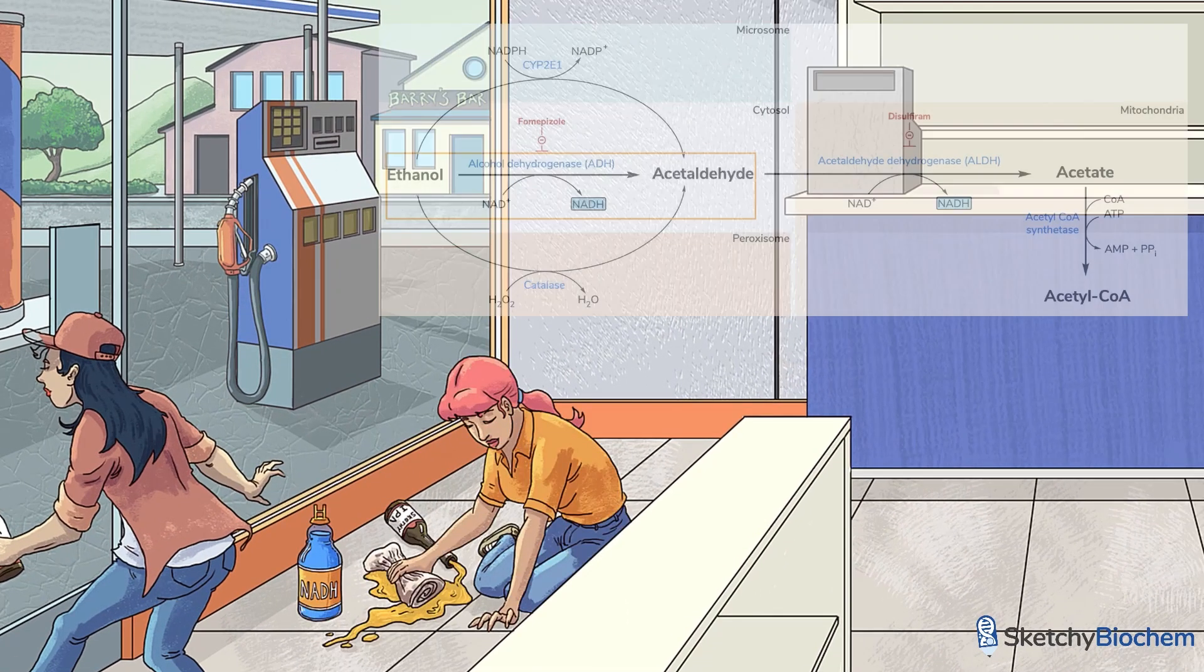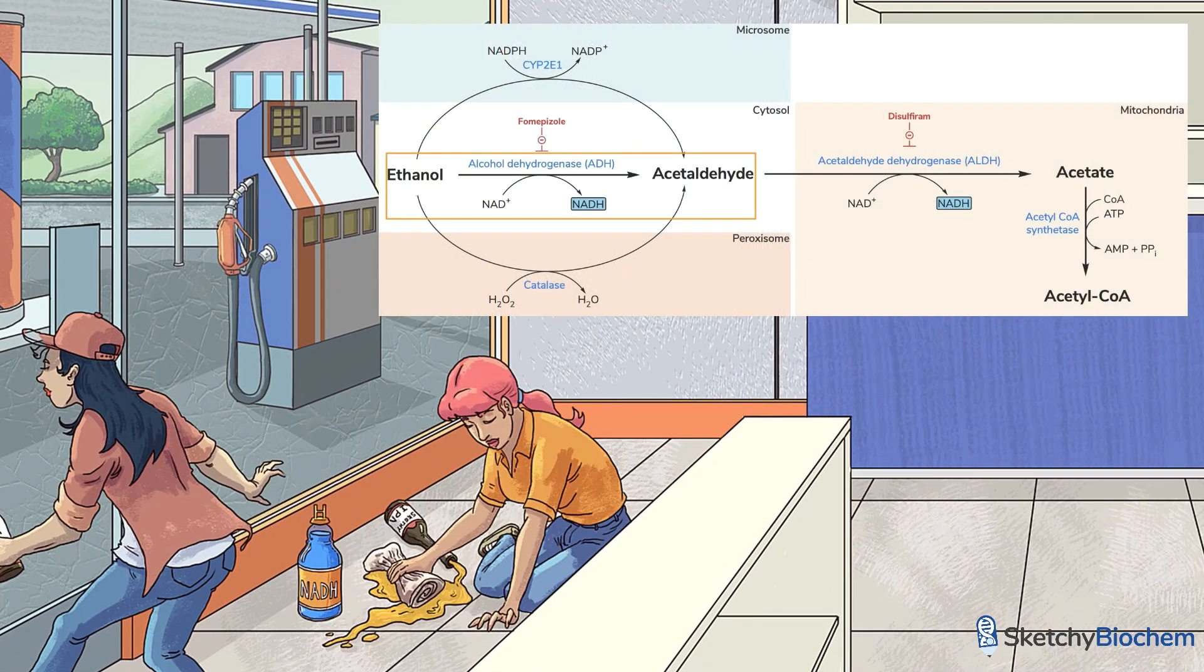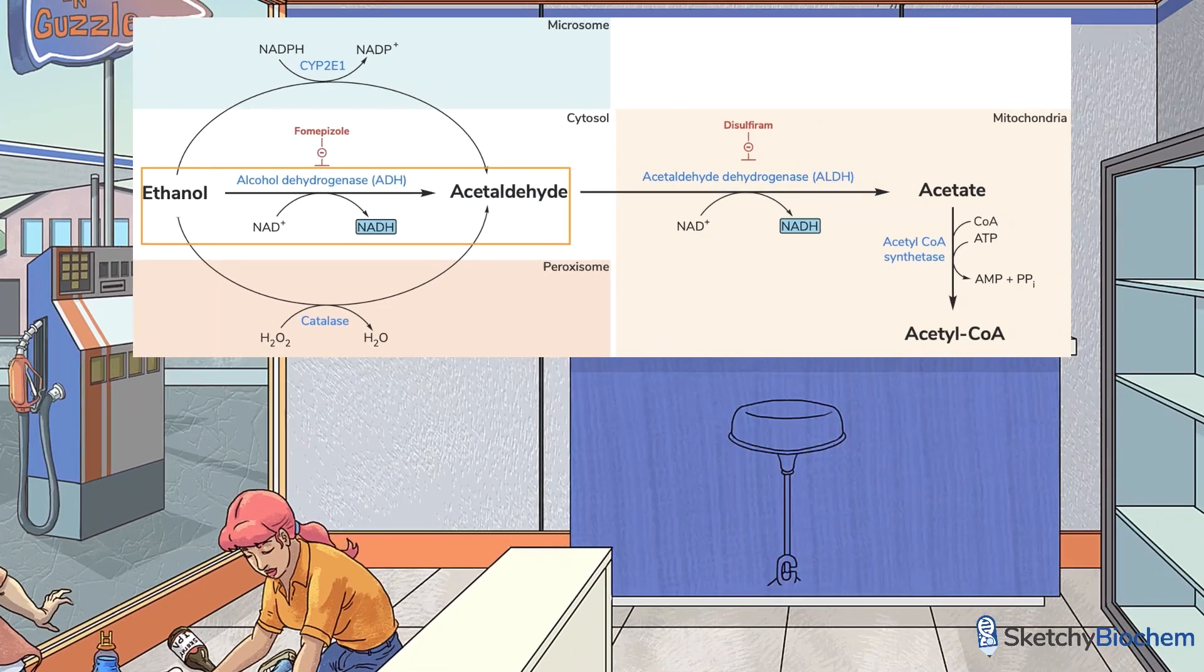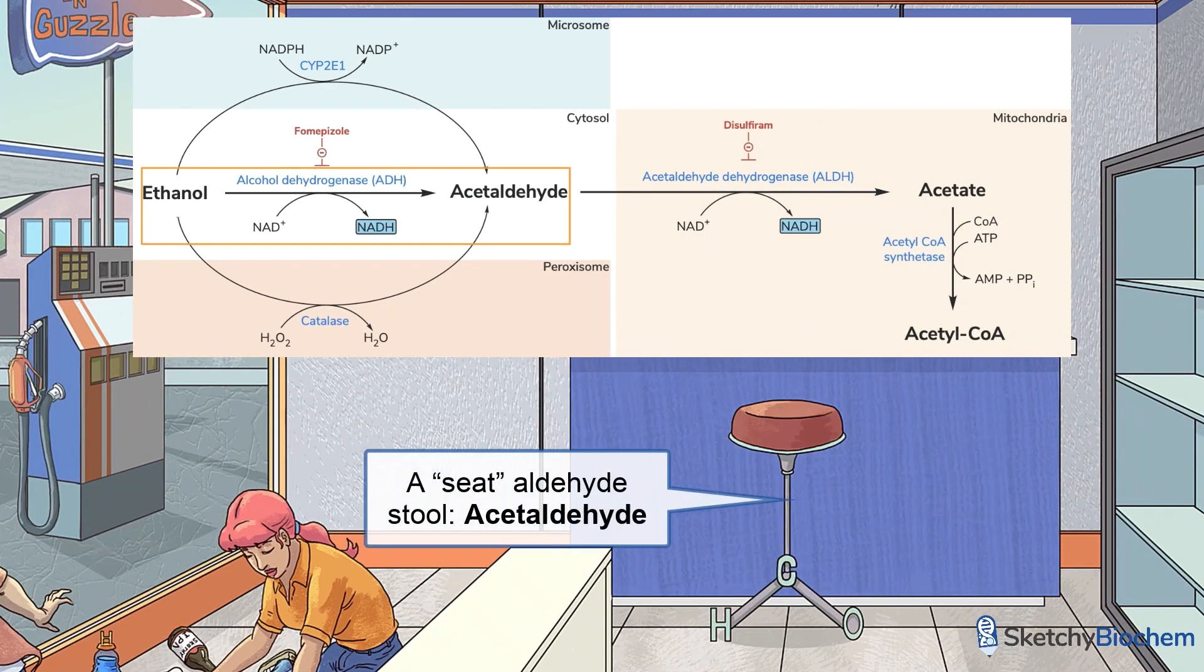First, alcohol dehydrogenase oxidizes ethanol to acetaldehyde. Our inebriated friend spilled some sketchy IPA as she was leaving the store, and now the poor clerk is using a towel to dehydrate it. She also dropped an NADH energy drink. Alcohol dehydrogenase is represented by the spilled alcohol and towel. And let that NADH energy drink remind you that we make one NADH during this step. The product is acetaldehyde, represented by an acetaldehyde stool. Some may even call it a seat aldehyde.